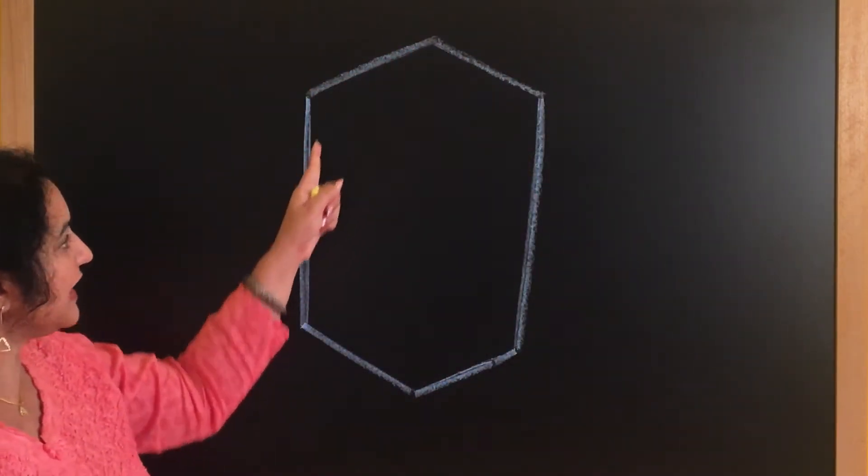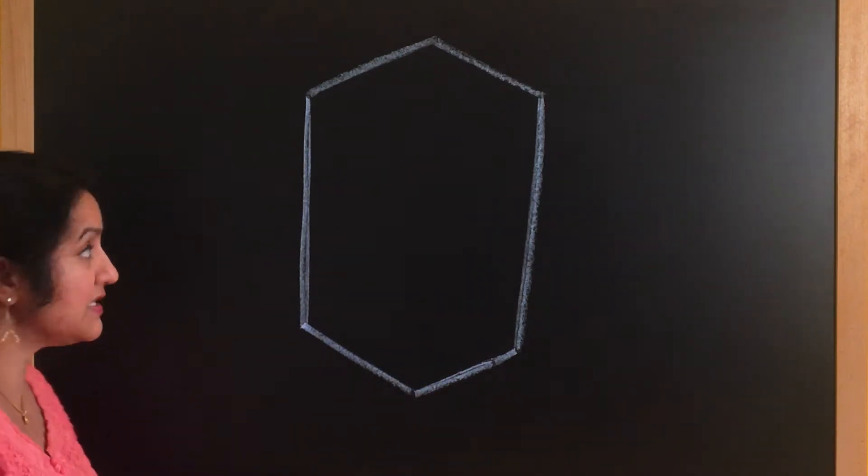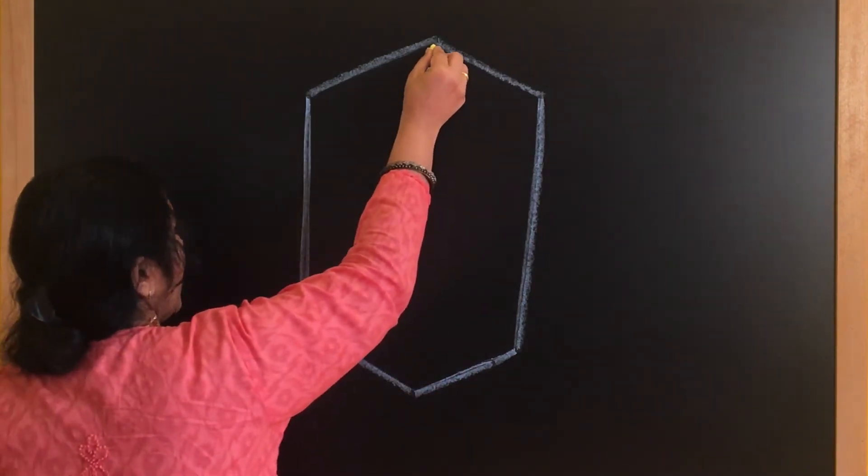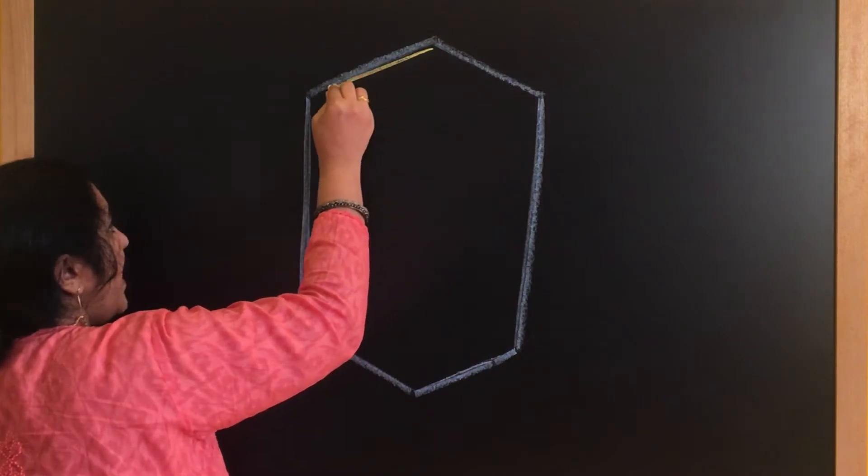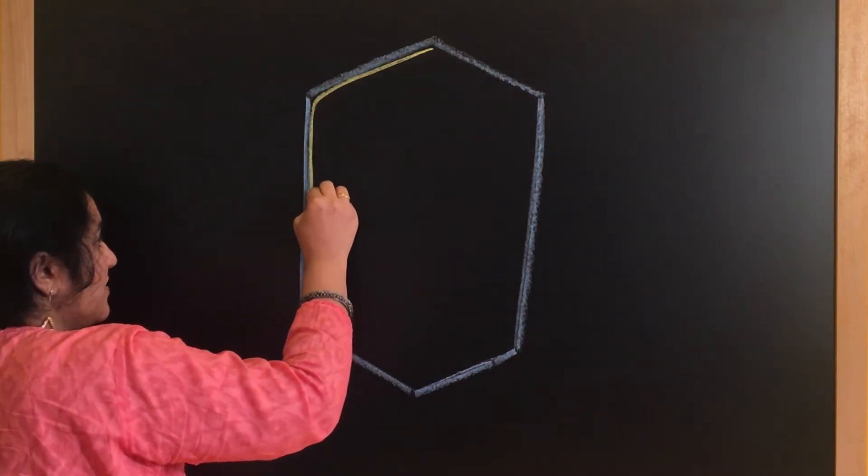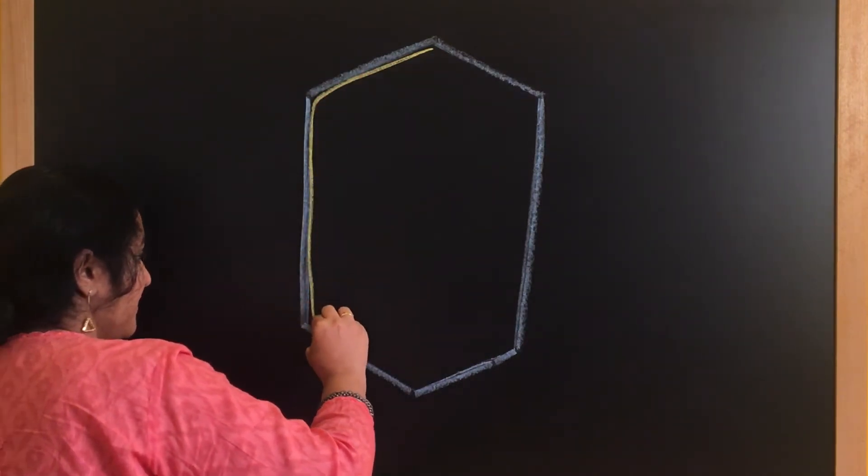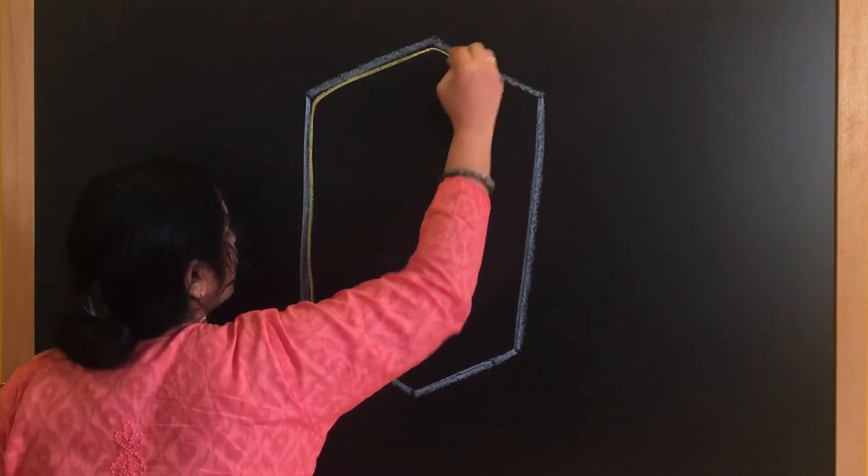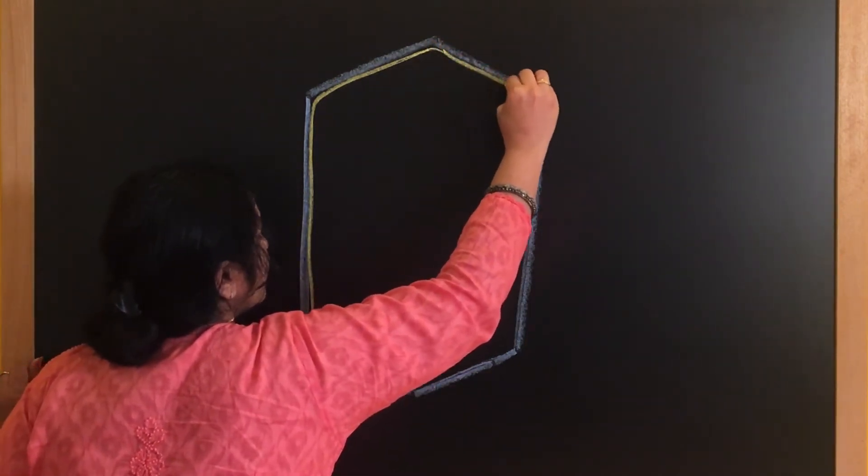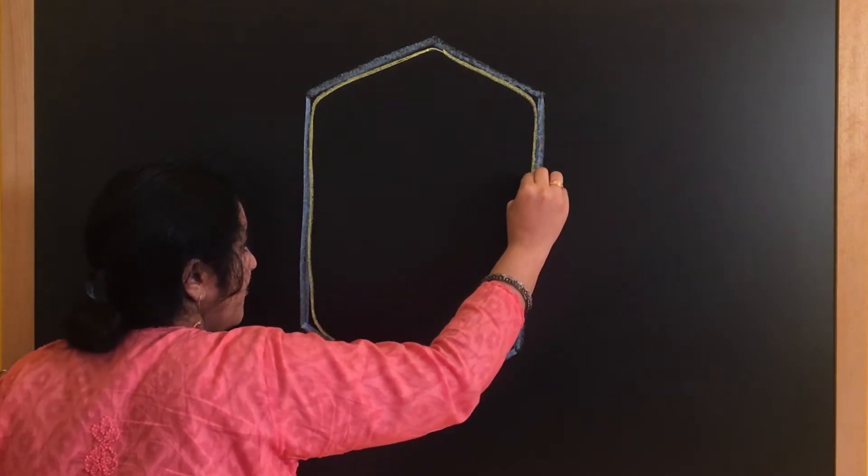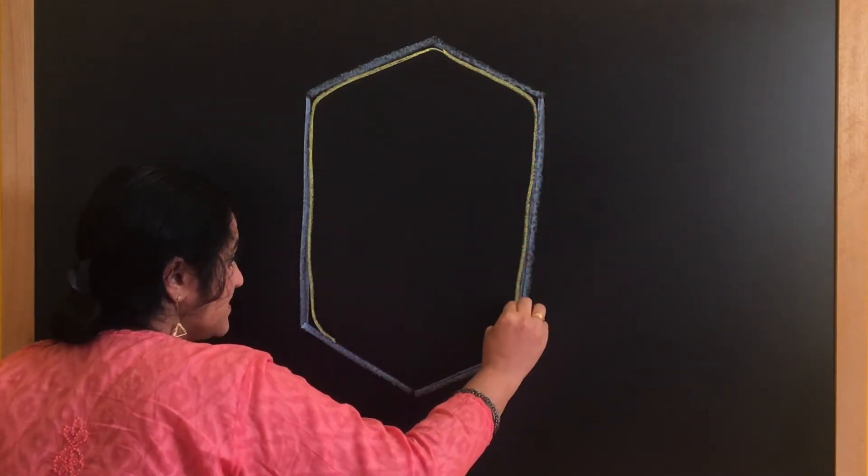Now what is there inside the cell wall? Since plant cells are living cells, they will be having a cell membrane, and the cell membrane is very closely aligned to the cell wall.